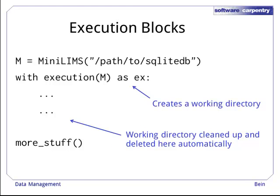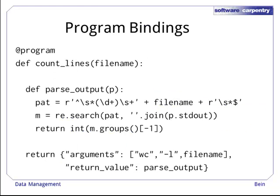Next, we come to execution blocks. Execution blocks isolate code. When a program crosses into an execution block, it creates a uniquely named subdirectory in the current directory and does all work in the block in that subdirectory. When you reach the end of the block, it logs all the details of external programs that were run and exceptions that were raised but not caught, and adds the files you wish to preserve to a mini limbs. Then it deletes the subdirectory it was working in. The only changes to your directory when the execution block finishes are to the mini limbs, so you never drown in miscellaneous files.